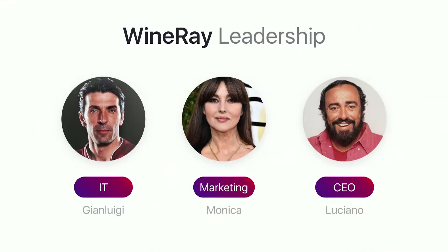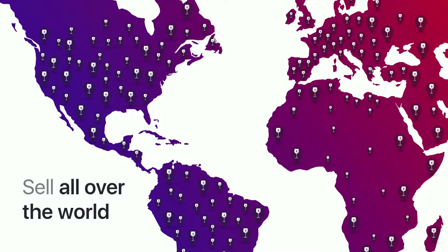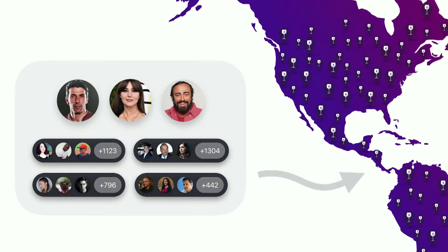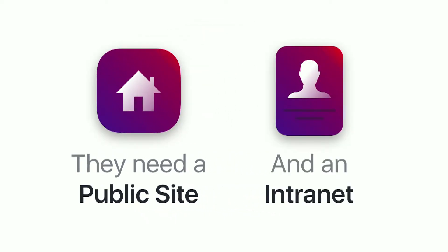We have our departments — we have Gianluigi as our IT manager, Monica as our marketing manager, and our CEO Luciano. We sell wine all over the world. How can we connect these 3,000 employees, all our departments, with our customers? Well, we're probably going to need a website to put our catalog of wines, and we're probably going to need an intranet, because we have so many employees.